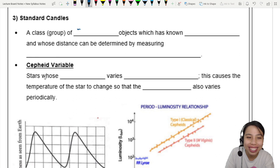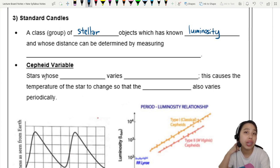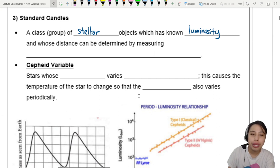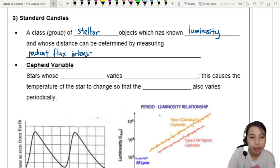A standard candle is not a literal candle, it's a class of stellar objects like stars which has a known luminosity. We have different ways of choosing or determining the luminosity of these standard candles pretty reliably. The distance can be determined by measuring the radiant flux intensity. These are our calibrated brightness in the sky which we use as reference points.